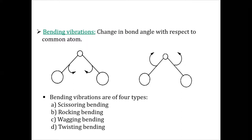Now, bending vibrations. If we are not only changing the bond length but also dealing with the bond angle — observing a change in the bond angle with respect to the common atom — that will be called bending vibrations. Bending vibrations can be classified into four categories: first, scissoring bending; second, rocking bending; third, wagging bending; fourth, twisting bending.